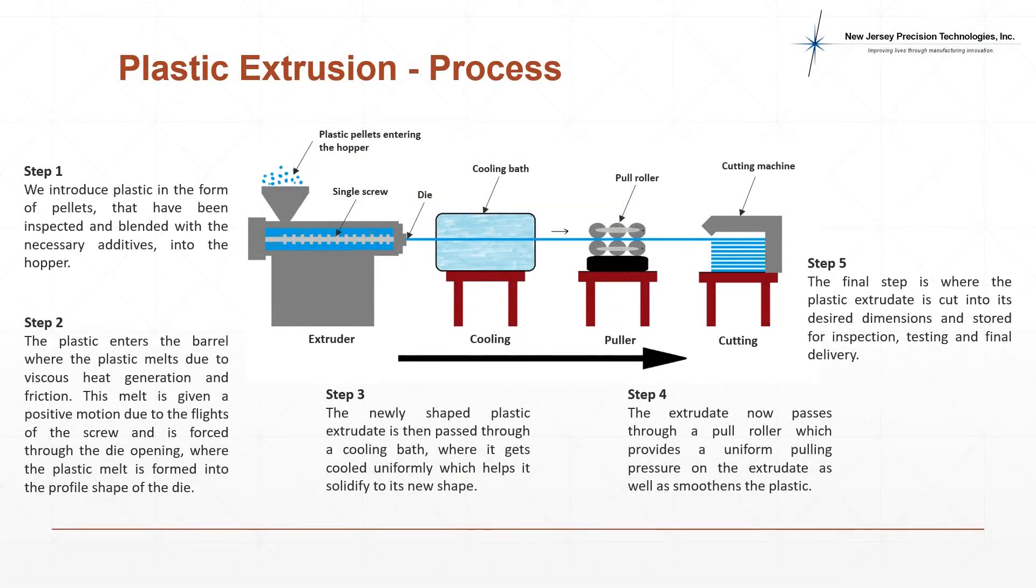Generally, in a plastic extrusion process, the plastic pellets blended with necessary additives are introduced into the extruder through a hopper. The plastic enters the barrel where it begins to melt due to viscous heat generation and friction. The screw imparts positive motion using its flights and the molten plastic is forced through the die opening, shaped and formed into the desired profile. The newly shaped plastic extrudate passes through a cooling bath where it cools uniformly and solidifies to the final shape.